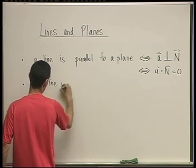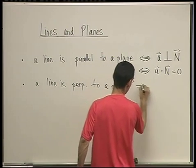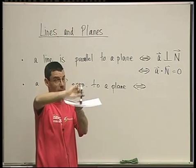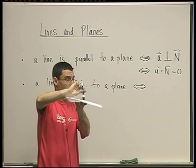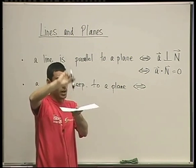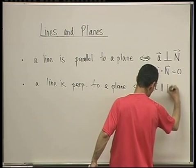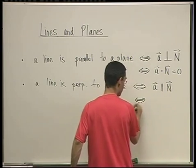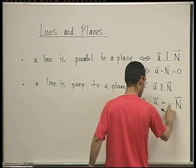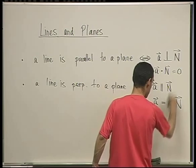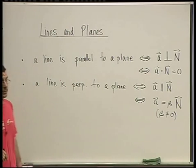When is a line perpendicular to a plane? If and only if the direction vector of the line is parallel to the normal. So if and only if **a** is parallel to **n**, which is if and only if **a = β·n** where β is non-zero — they're collinear.